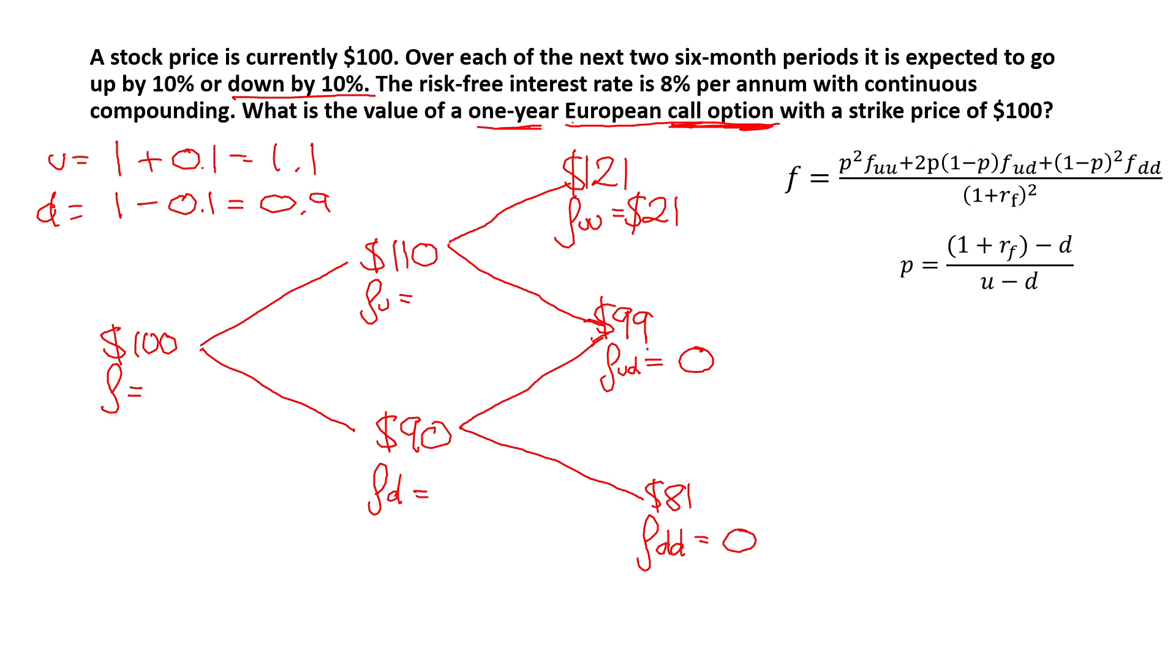Now, in a two-step binomial tree, you can either go back manually, period by period. For instance, now that we have FUU and FUD, we could go back using the formula for one period binomial tree in order to find out FU. And then we would do the same for FD. Once we have FU and FD, we would again go back to find F, the current option value. However, there is a formula that simplifies this process for us, which by knowing the probability, which we're going to calculate, the risk-free rate, which we're given, which is 8%, and then FUU, FUD, and FDD, so the option prices in the last period, we can directly go to F and find F, which is what the question is asking.